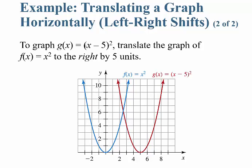Whenever there's something inside the parentheses, it moves the graph the opposite way you'd think. If it's minus 5, it moves to the right five. And if it was plus 5, it would move to the left five.